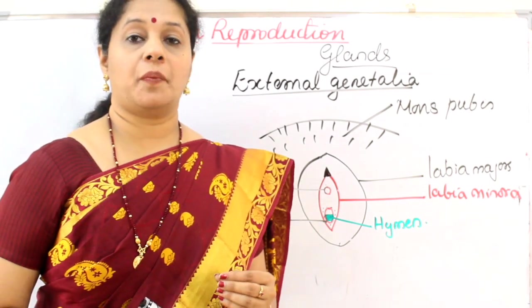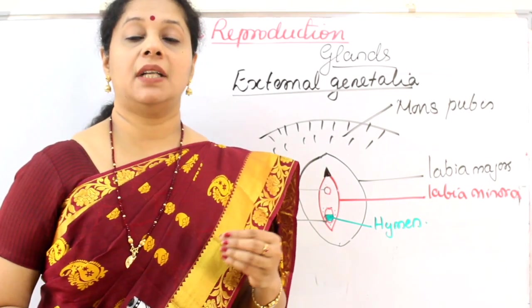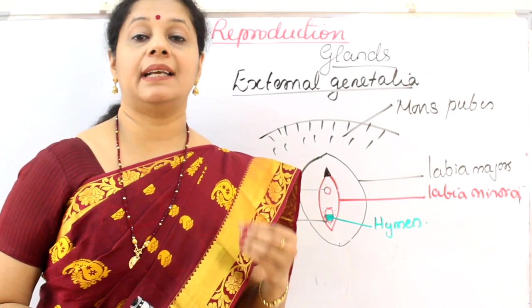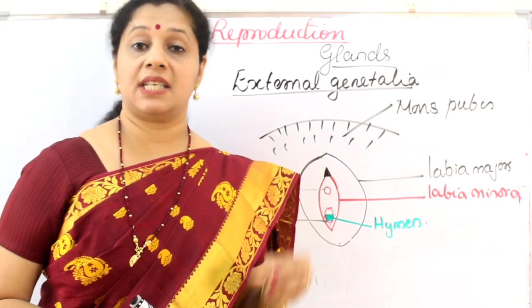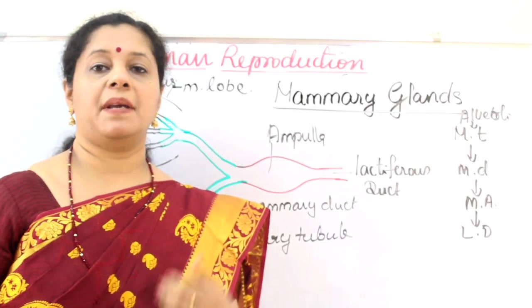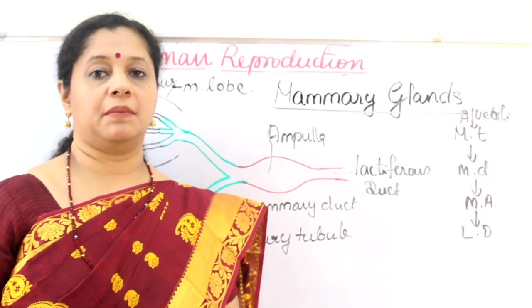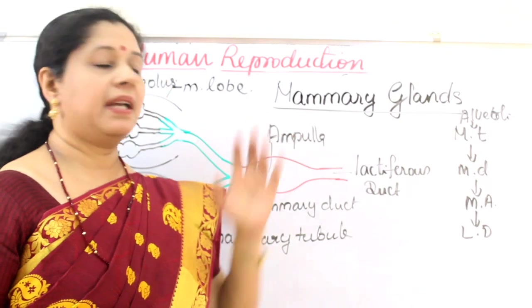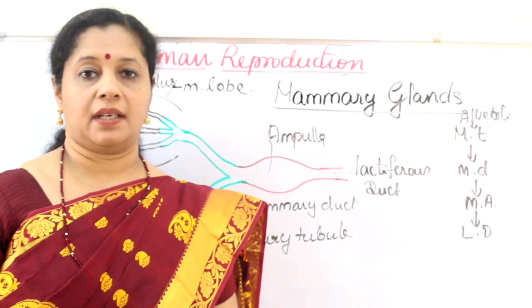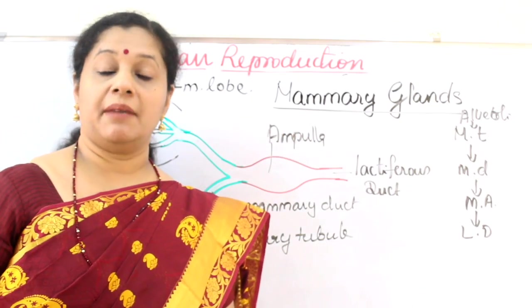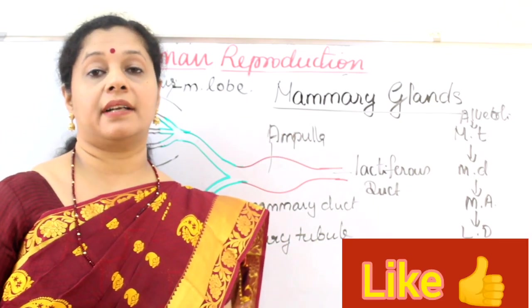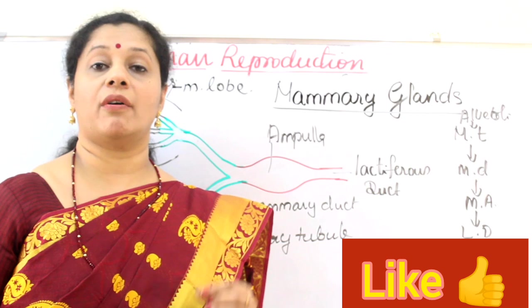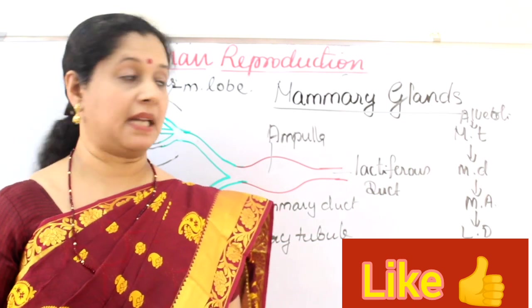During copulation, the male ejaculates semen into the vaginal cavity. To support the baby after childbirth, mammary glands are required, and well-developed mammary glands are a characteristic feature of human females.